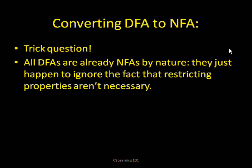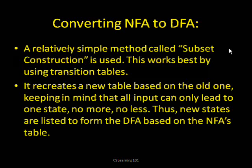Now suppose you wanted to convert an NFA to a DFA. That's a little bit different. You can use a method called subset construction, and it's better to understand if we use tables. It recreates a brand new table for the DFA based on the old table for the NFA, keeping in mind that all input can only lead to one state — no more, no less. New states are listed to form the DFA based on the NFA's table.